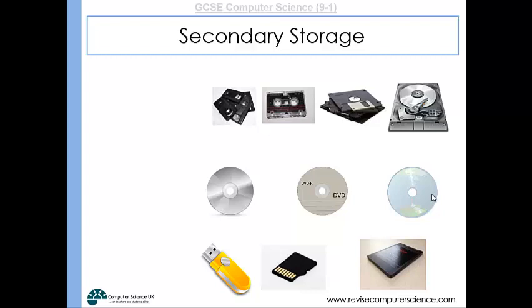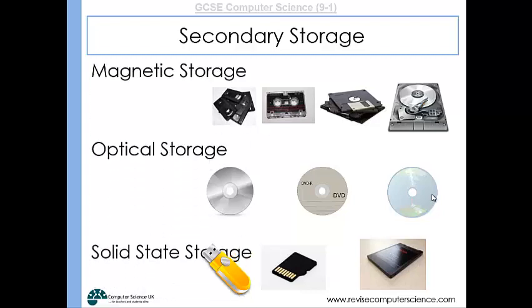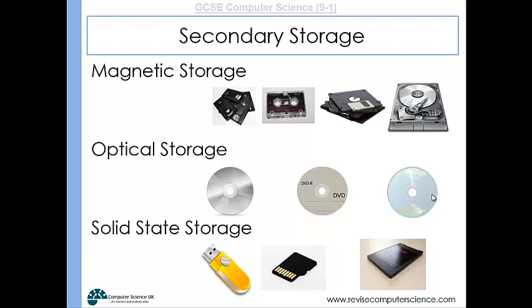Secondary storage has three main technologies: magnetic storage, optical storage, and solid state storage. From the pictures you will recognise many of these devices — your standard hard drive is a magnetic storage device. You may well have used CDs, DVDs, or Blu-ray discs, certainly for films. And solid state storage includes USB memory sticks, flash cards, and solid state drives — all devices you've probably come across.